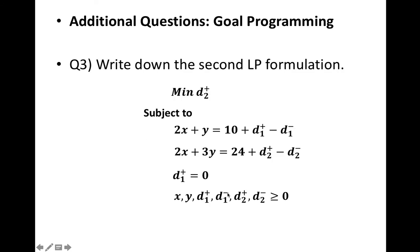And the next problem is to solve with minimizing d_2^+. We have the same constraint from the first problem. And we add the soft constraint for the second priority goal as follows: 2x + 3y = 24 + d_2^+ - d_2^-, a soft constraint corresponding to your second priority goal.